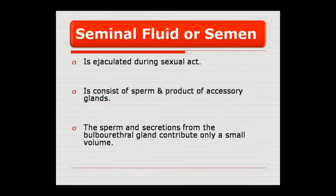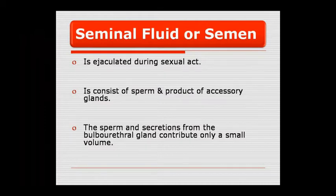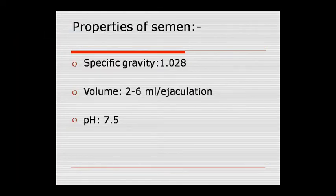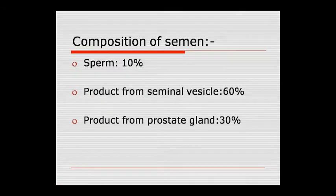The seminal fluid is called semen. During sexual act, ejaculation occurs. Semen is the combination of sperm and accessory gland products. Semen has a specific gravity of 1.028, volume of 2-6 ml per ejaculation, and pH of 7.5. Semen composition is 10% sperm, 60% seminal vesicle product, and 30% prostate gland secretion.